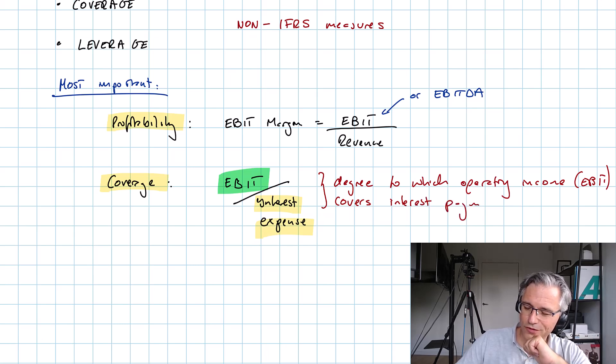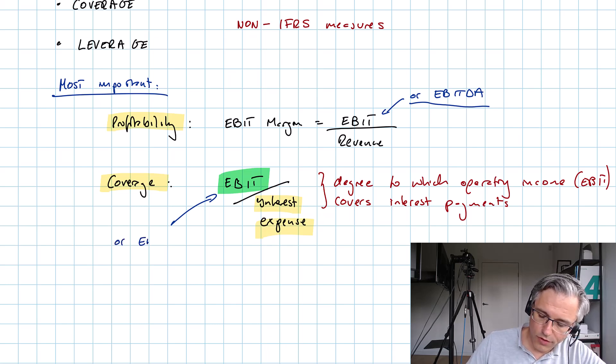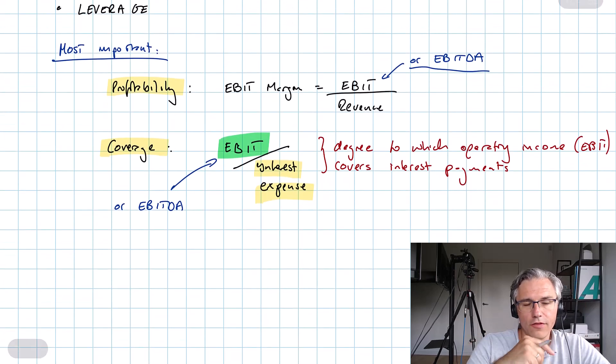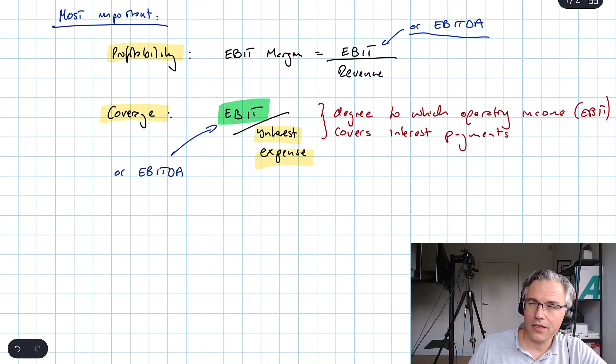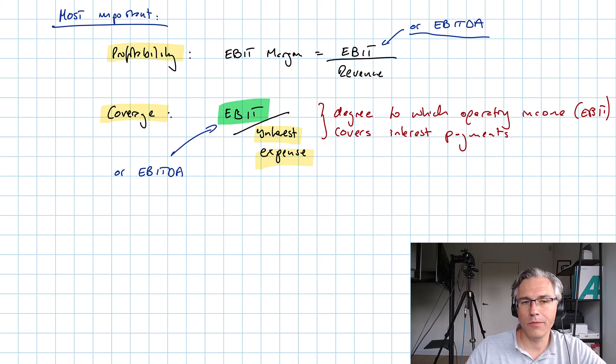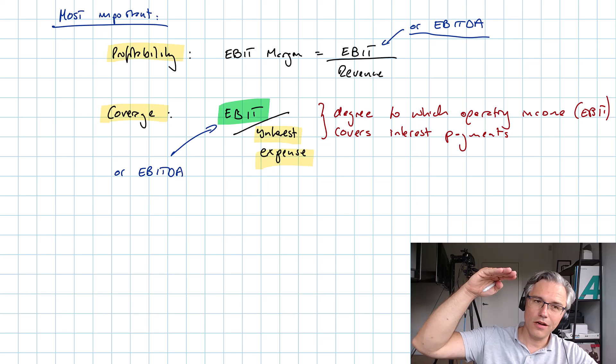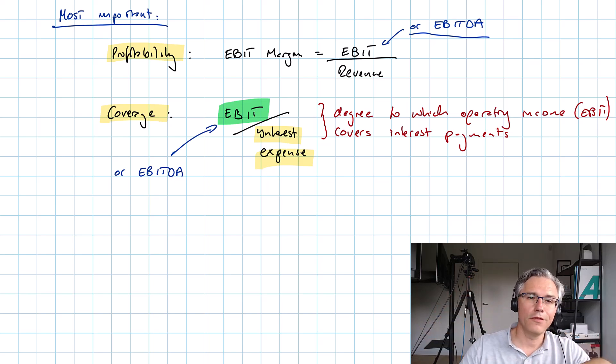A couple of notes. Just like we said that EBIT may be changed to EBITDA, well once again the same is true. EBITDA, if you wish to focus more on a cash flow based measure or closer to cash flow measure, you would take out the depreciation and amortization expense, making the numerator of the fraction higher. So this will give you a more favorable coverage ratio.